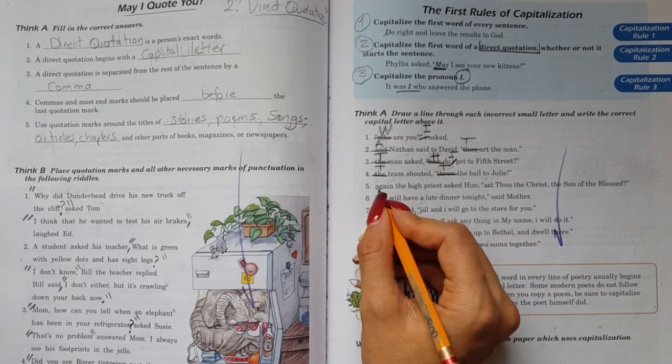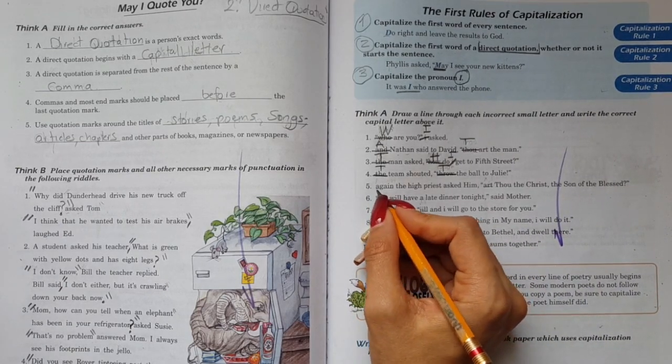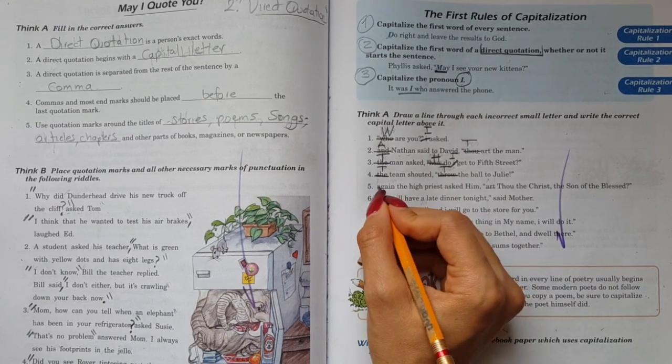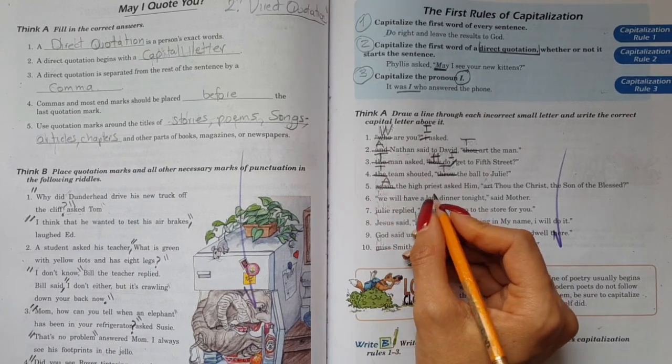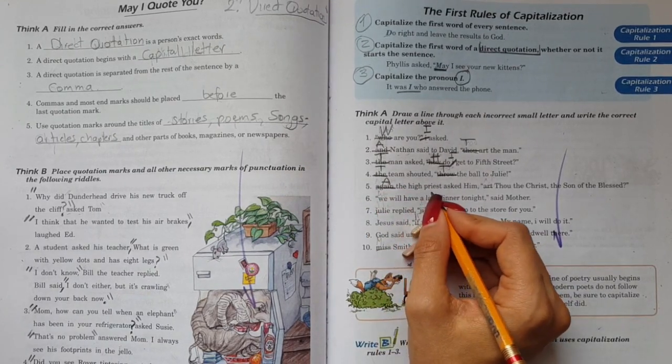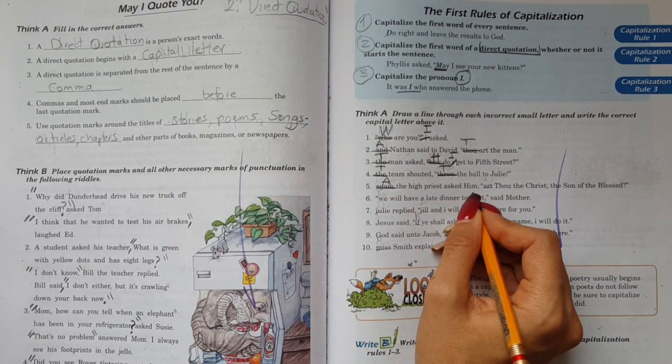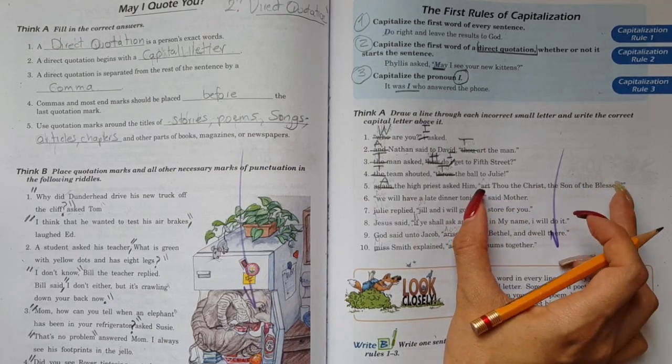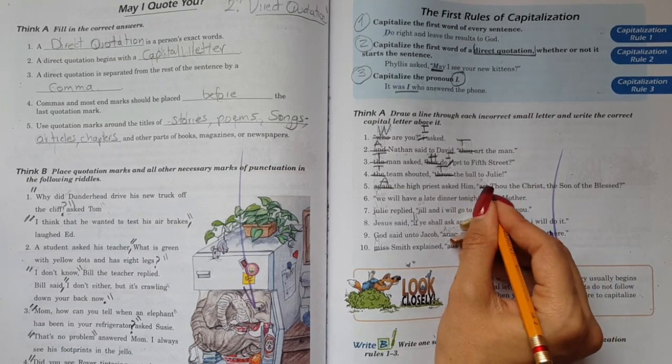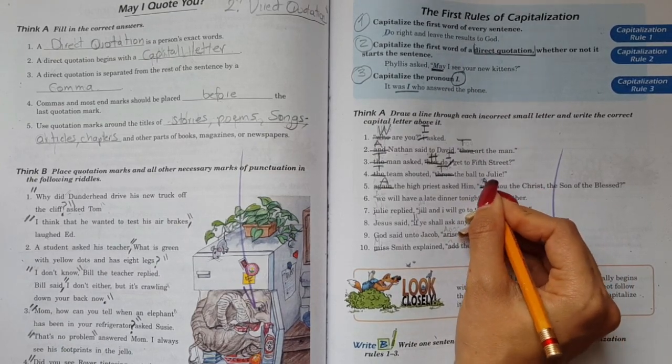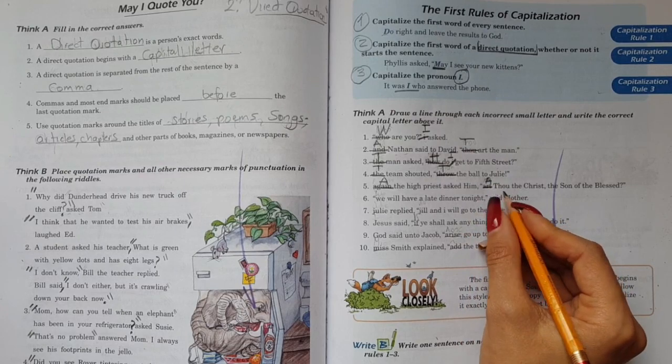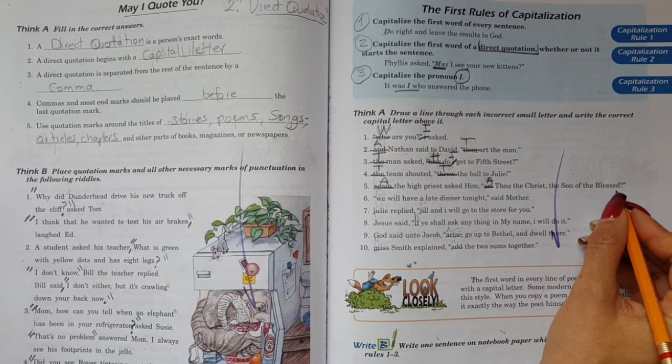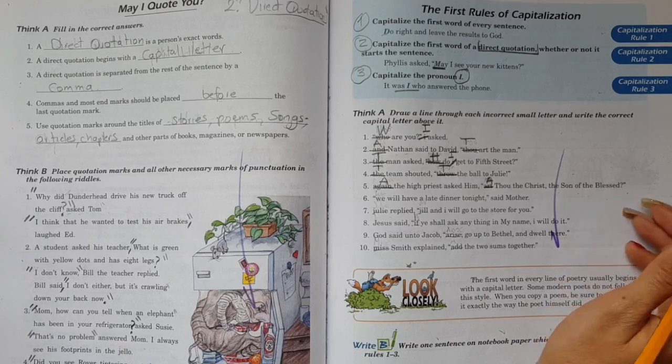Next, number five. Again - yes, because again is starting the sentence, it should be with capital letters. So capital A. Again, the high priest asked him, art - so here we can notice that we have a direct quotation. So I will cross art and I will put a capital A. Art thou the Christ, the son of the blessed. You see, so now it is correct. This is so easy.